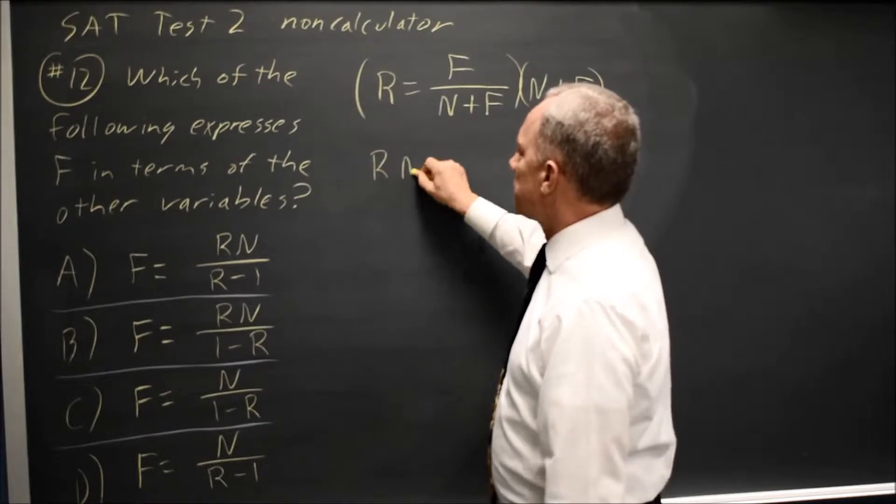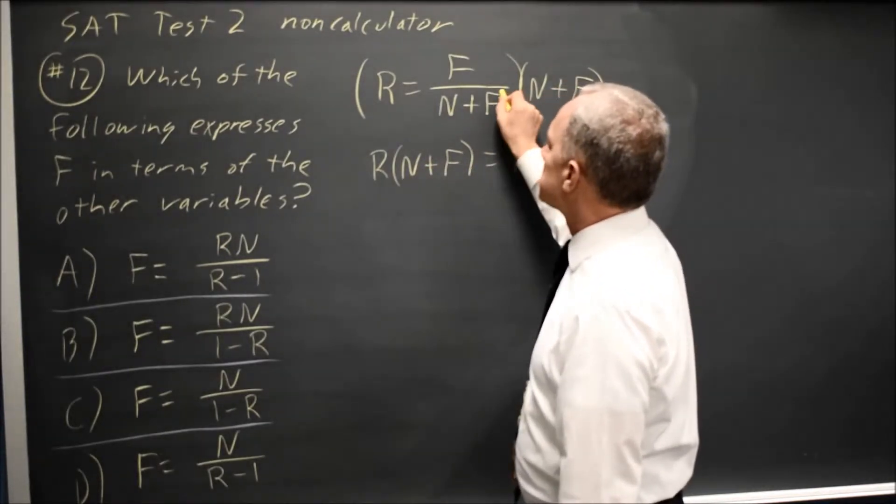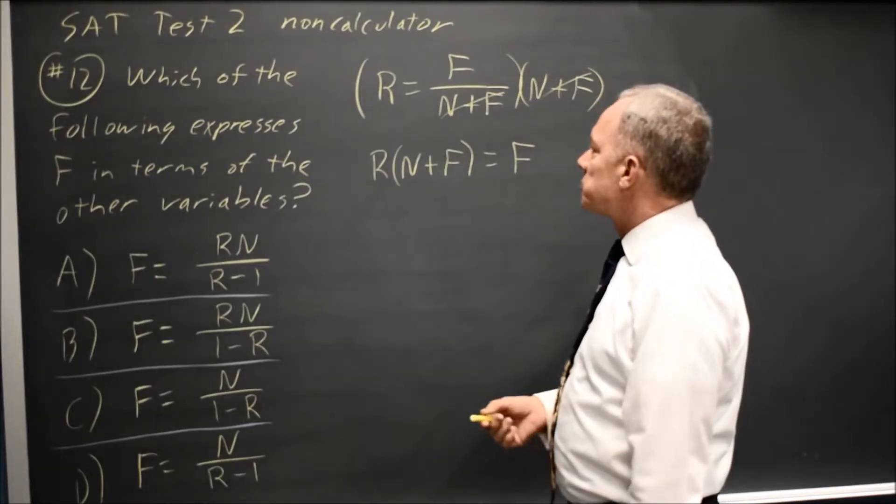giving me r times n plus f on the left equals f on the right, because n plus f over n plus f is 1, so that's f times 1 is f.